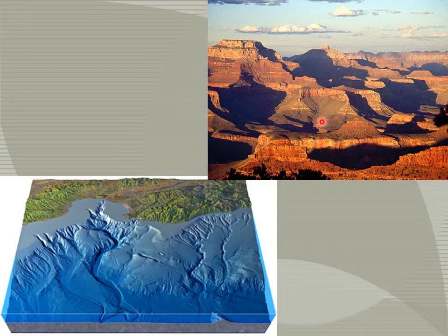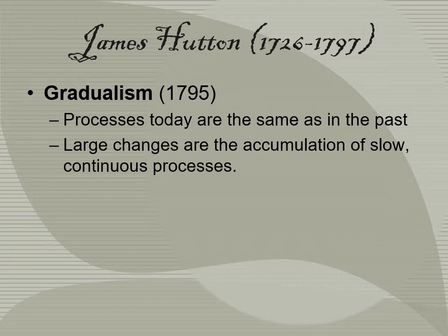Here we have the striations in the water and the layers of rock in canyons, and we can see the differences in how old certain layers of rocks are. He also described gradualism, which states that processes today are the same as they were in the past, so large changes are the accumulation of slow, continuous processes — for example, erosion.